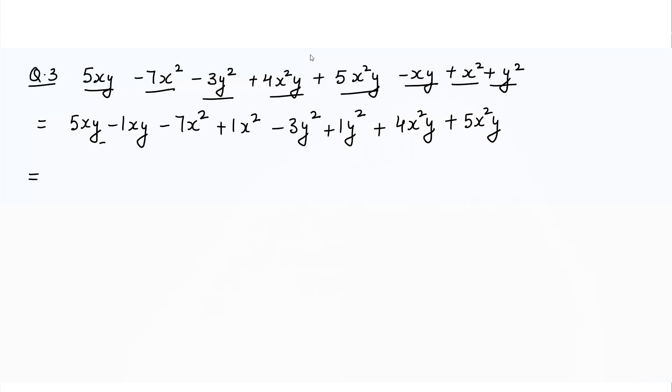5 minus 1 is 4xy minus 7 plus 1 is minus 6x square minus 3 plus 1 is minus 2y square. 4 plus 5 is 9x square y. So that's the answer for this particular question.